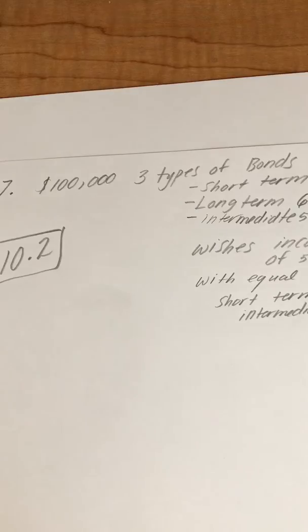How much should she invest in each type to satisfy the given conditions? Short-term bonds pay 4% annually, intermediate-term bonds pay 5%, long-term bonds pay 6%. The investor wishes to realize a total income of 5.1% with equal amounts invested in short and intermediate terms.